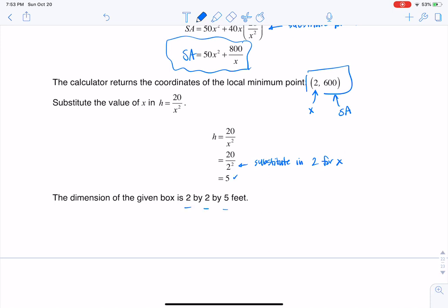So the dimensions are two by two by five feet. That will minimize the cost of this rectangular box. And there's number 85. Thanks so much. Bye.